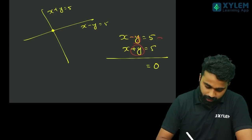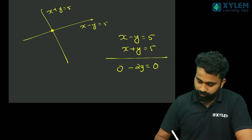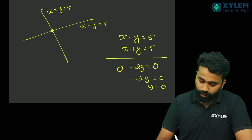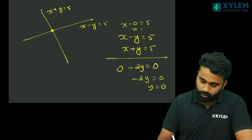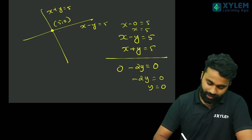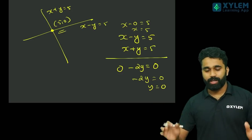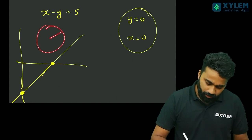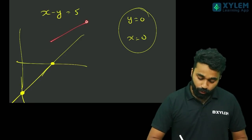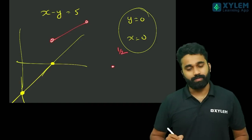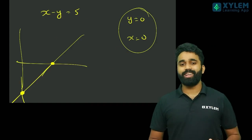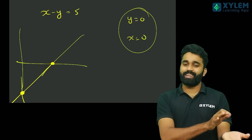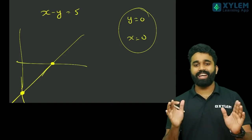Subtracting: minus y minus y is minus 2y, x minus x is 0, so minus 2y equals 0, so y equals 0. Then x minus 0 equals 5, so x equals 5. We put these two points into the circuit equation. You can cut the x and x, cut the y and x — that's the idea.